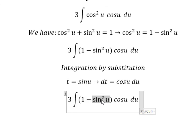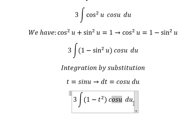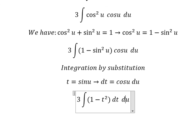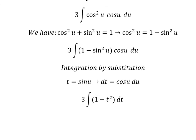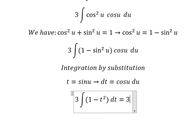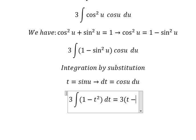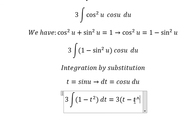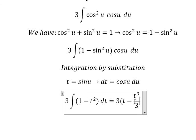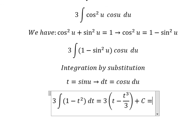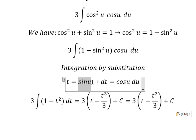So we have one minus t squared times cosine u du, and cosine u du we change to dt. Integrating gives t to the power of three over three plus C. And t is equal to sine u.